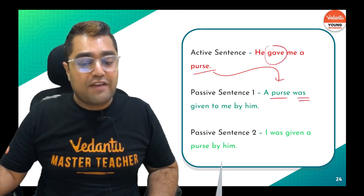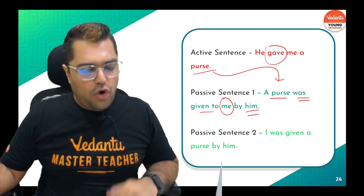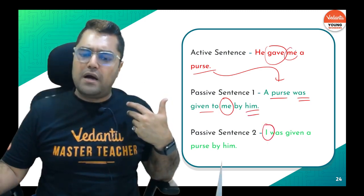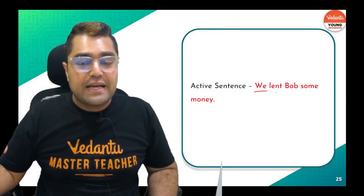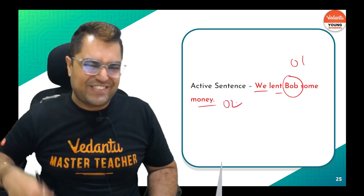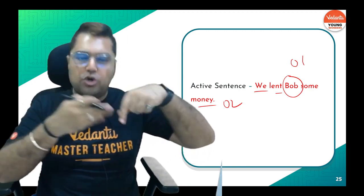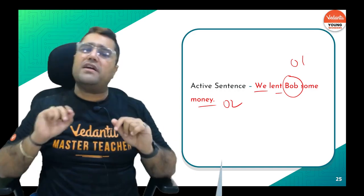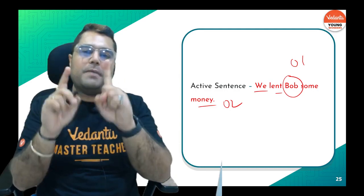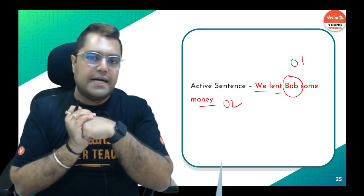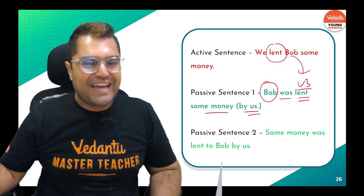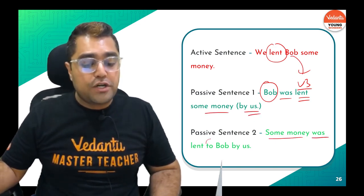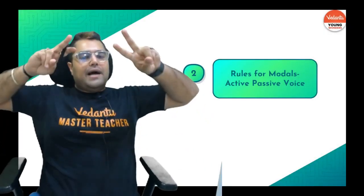Practice: 'He gave me a word.' — 'was' because it is past tense. 'Given to me by him' — OR — 'I was given a word by him.' The subject goes to the end. Next: 'Bob lent some money.' — V3 of 'lend' is 'lent.' 'Some money was lent to Bob by...' — pause the video, write the answer, give it in the comment section, then unpause and check!